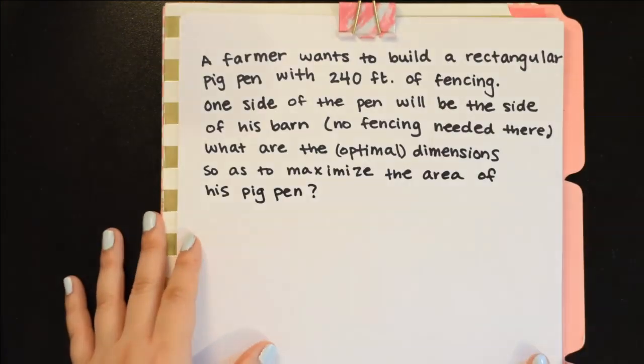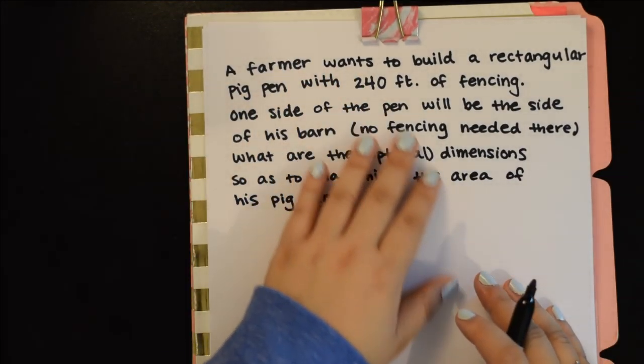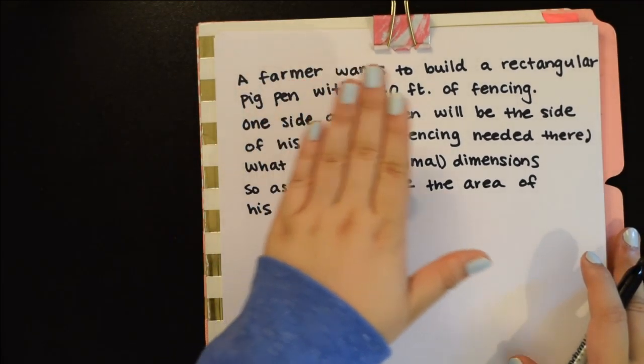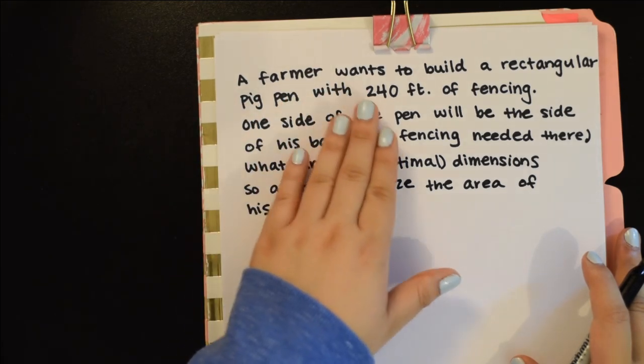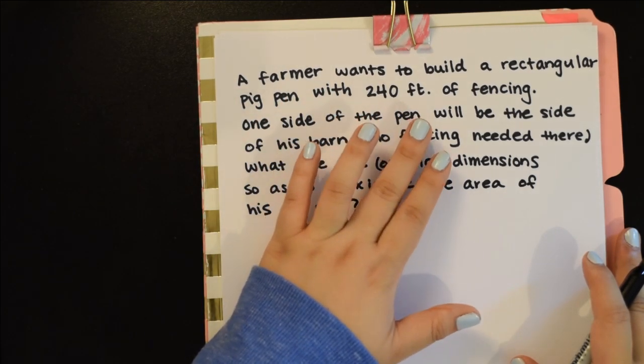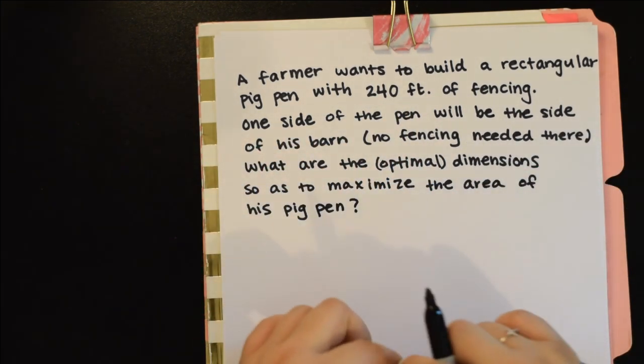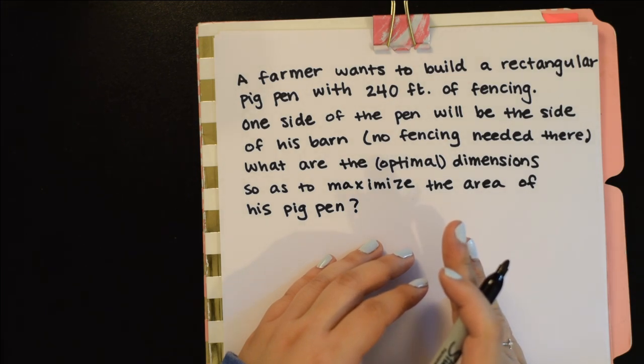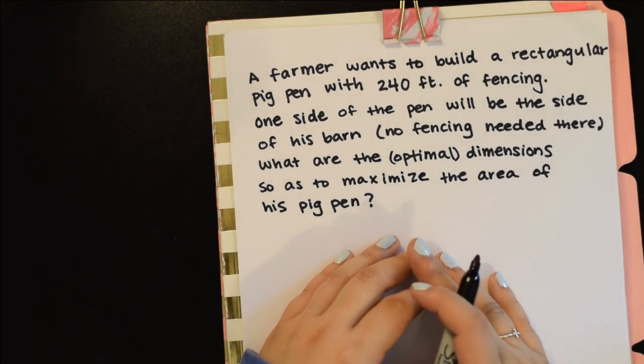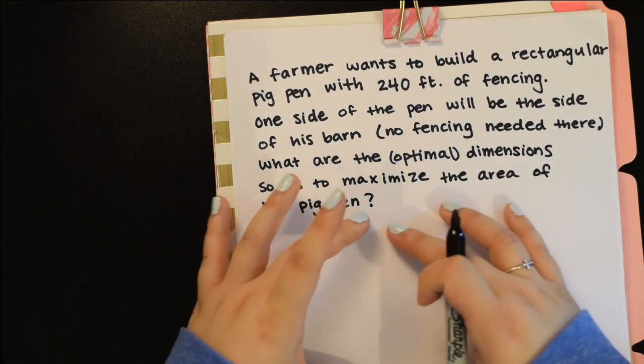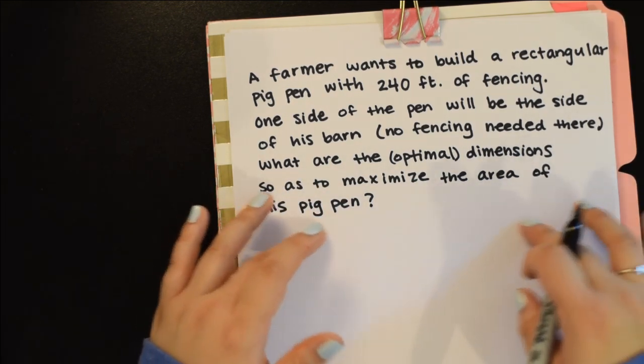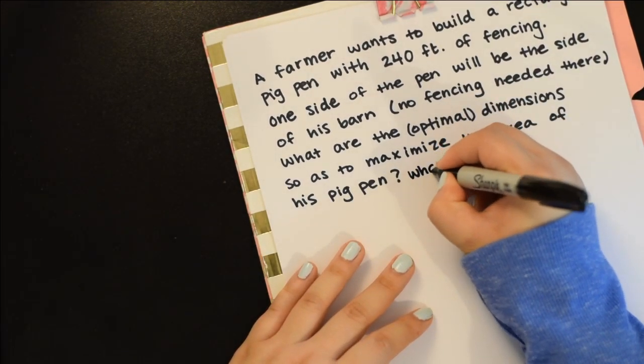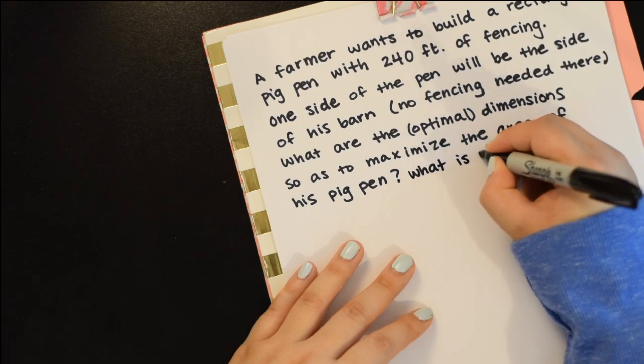So a farmer wants to build a rectangular pig pen with 240 feet of fencing, but one side will be his barn. We want to know what are the actual dimensions of the pen to maximize the area, and also what is that area.